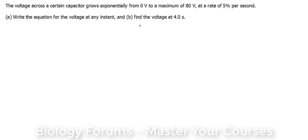The voltage across a certain capacitor grows exponentially from 0 volts to a maximum of 80 volts at a rate of 5% per second. Part A: write the equation for the voltage at any instant, and Part B: find the voltage at 4 seconds.